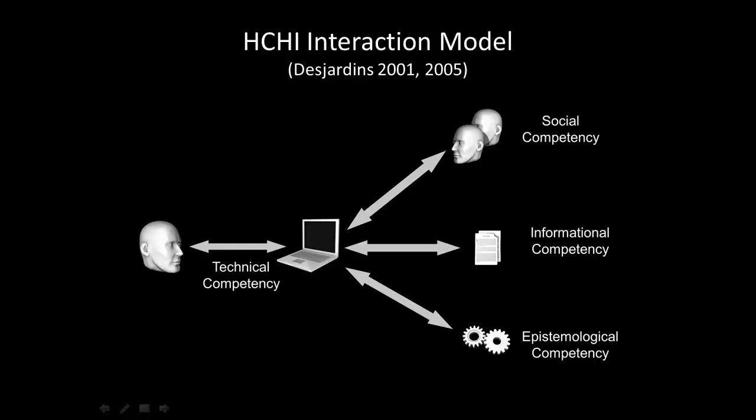According to Desjardins 2001–2005, computer usage can be categorized using four categories, three of which derive directly from the three tasks that computers can perform. The final category has been added in recognition that the computer must be given commands in order to complete these tasks. The following text briefly describes each of these interactions, or competencies — the ability of individuals to complete tasks using computers.